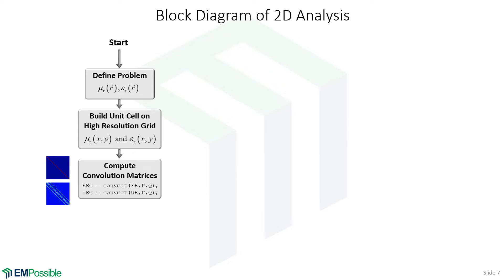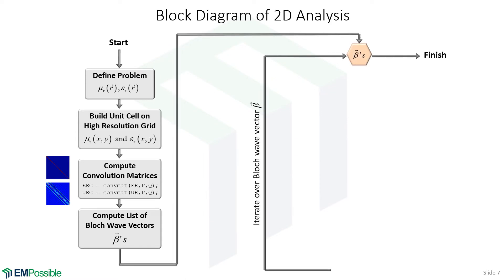If we have a homogeneous unit cell we get a diagonal convolution matrix; otherwise we get a full matrix where the larger values tend to run down the center diagonal. Just before entering the main loop, we compute our list of block wave vectors — either marching around the perimeter of the irreducible Brillouin zone with a couple hundred beta values, or doing a mesh grid over the Brillouin zone for isofrequency contours. We then run the PWEM on each block wave vector in that list.